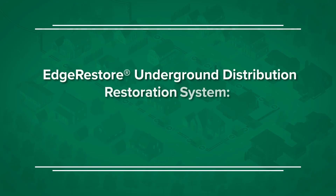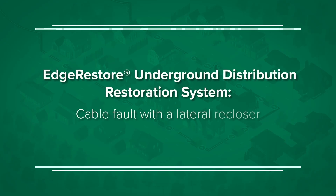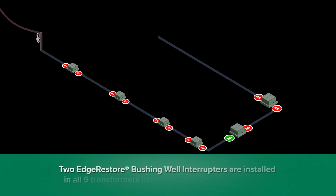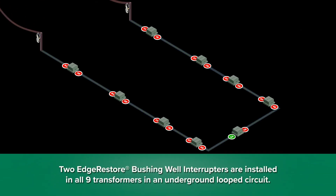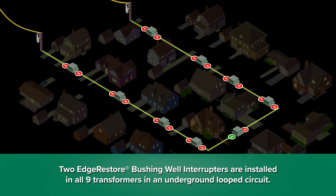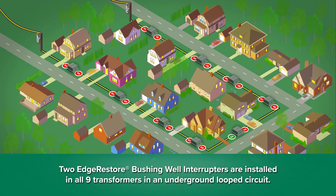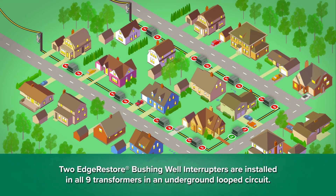Edge Restore Underground Distribution Restoration System: Cable Fault with a Lateral Recloser. Two Edge Restore bushing wheel interrupters are installed in all nine transformers in an underground loop circuit.